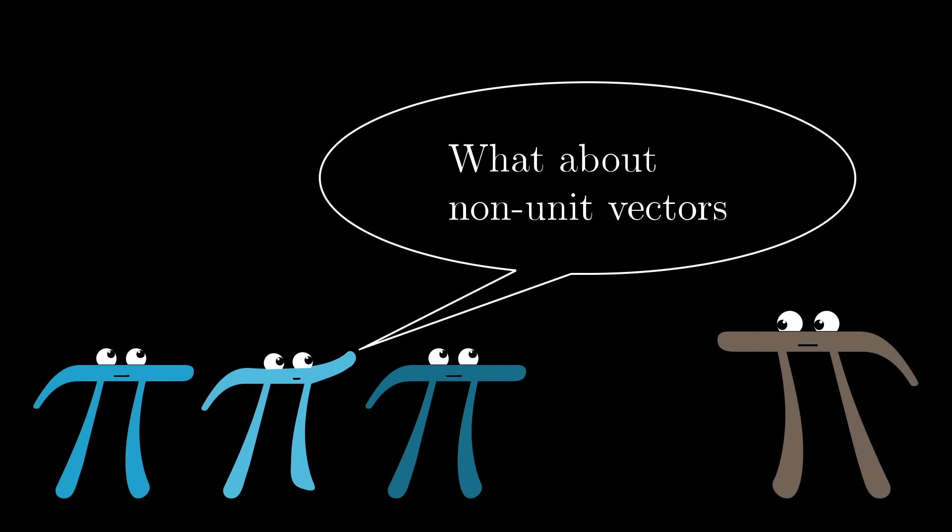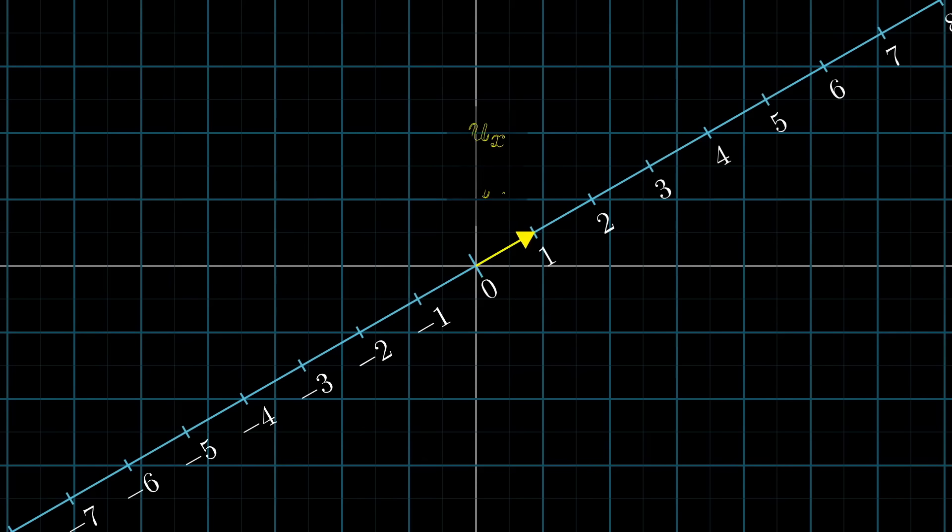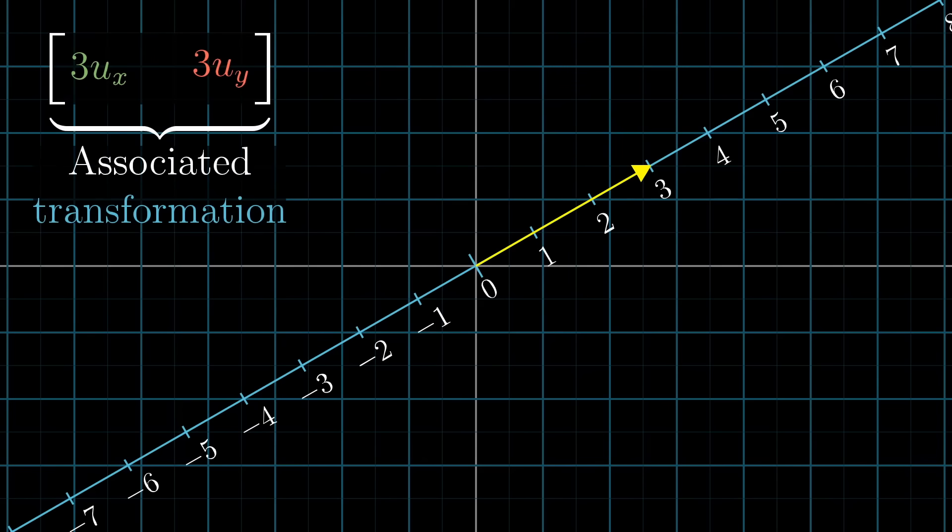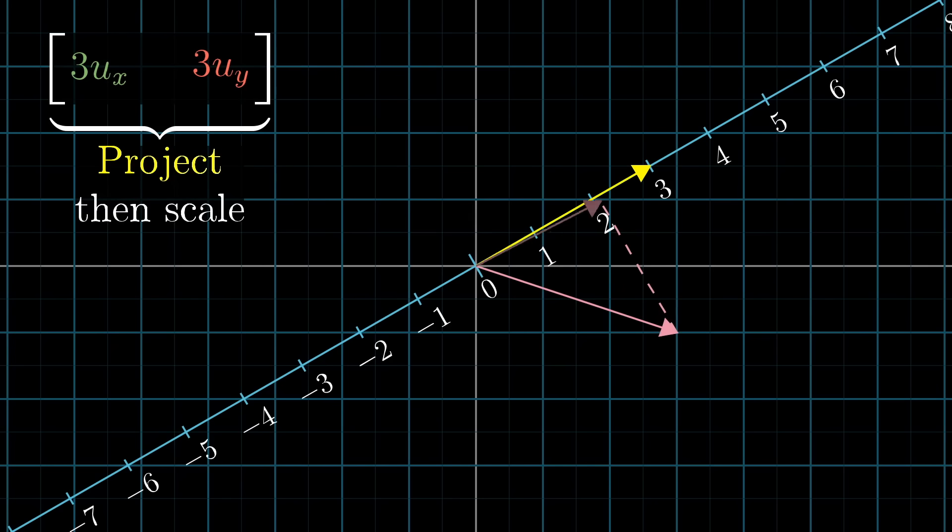So what about non-unit vectors? For example, let's say we take that unit vector u-hat, but we scale it up by a factor of 3. Numerically, each of its components gets multiplied by 3. So looking at the matrix associated with that vector, it takes i-hat and j-hat to 3 times the values where they landed before. Since this is all linear, it implies more generally that the new matrix can be interpreted as projecting any vector onto the number line copy and multiplying where it lands by 3. This is why the dot product with a non-unit vector can be interpreted as first projecting onto that vector, then scaling up the length of that projection by the length of the vector.